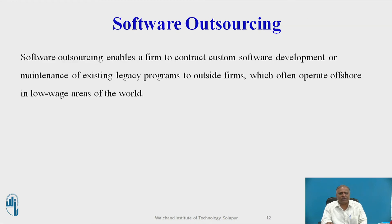Software Outsourcing enables a firm to contract custom software development or maintenance of existing legacy programs to outside the firm, which often operates offshore in low-wage areas of the world. According to industry analysts, spending on global IT outsourcing services was approximately $440 billion in 2014. For example, Cemex, Mexico's largest cement manufacturer, signed a 10-year, $1 billion outsourcing deal with IBM in July 2012. Under the deal, IBM's responsibilities include application development and maintenance as well as IT infrastructure management for Cemex's headquarters in Mexico and around the globe, including taking over Cemex's finance, accounting, and human resources systems.